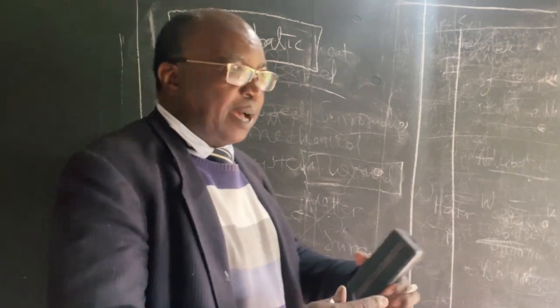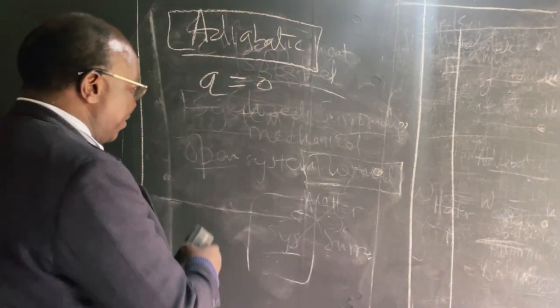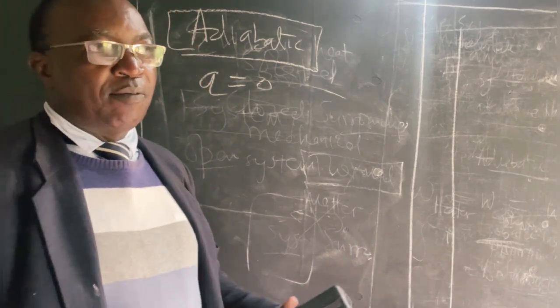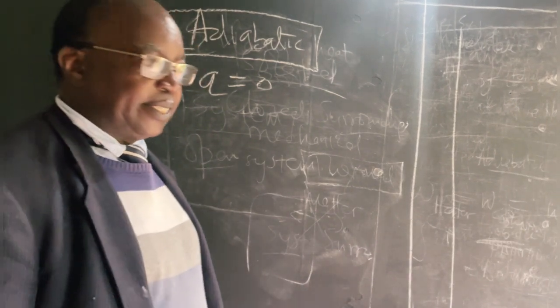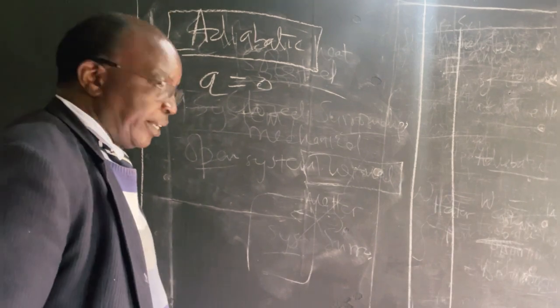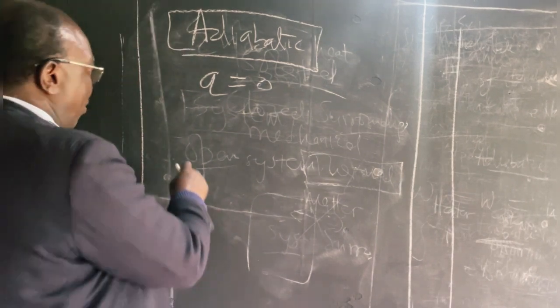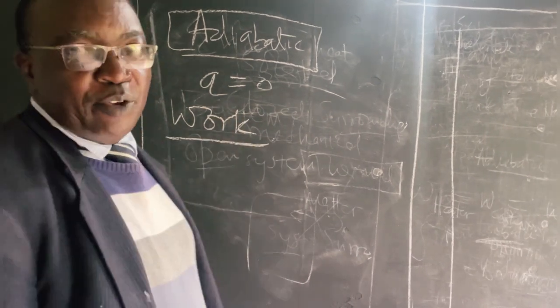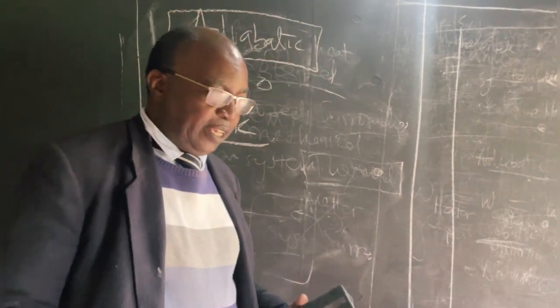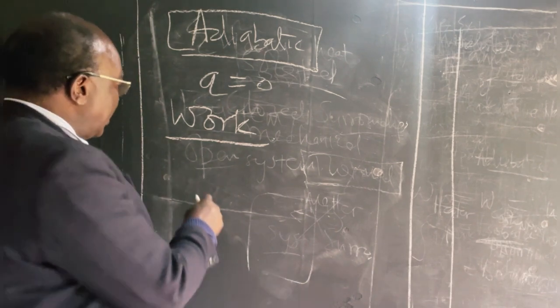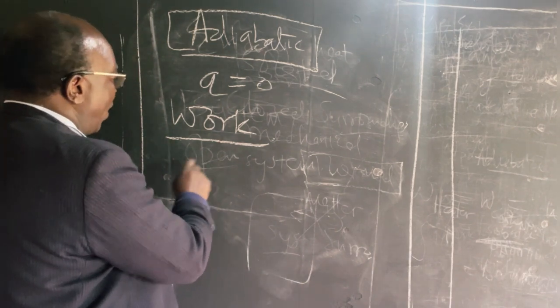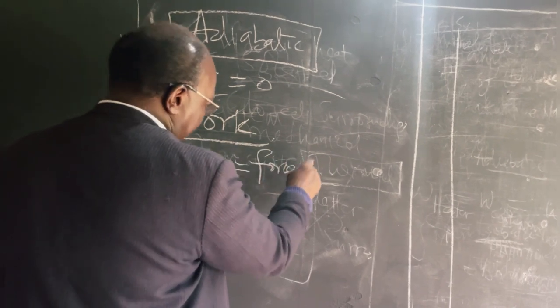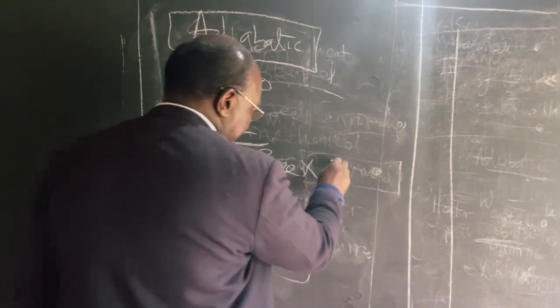Now, this term system and surroundings have become very important particularly when we are defining work. For example, we can talk of work being done on a system and work being done on the surroundings. So that brings us to the concept of work. And work is something which can be quantified. Work can be quantified in terms of simple calculations where we know that work or the quantity of work is gotten from force times displacement.